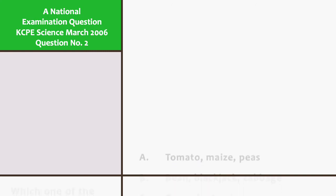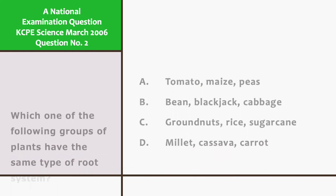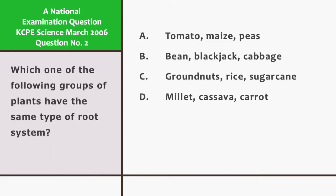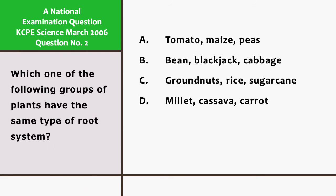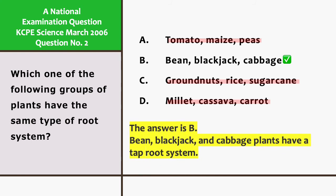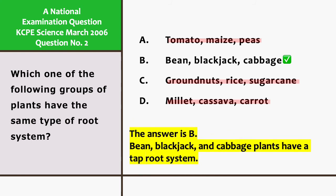Which one of the following groups of plants have the same type of root system? A. Tomato, maize, and peas. B. Bean, blackjack, and cabbage. C. Groundnuts, rice, and sugarcane. And D. Millet, cassava, and carrot. Cabbage plants have a tap root system.